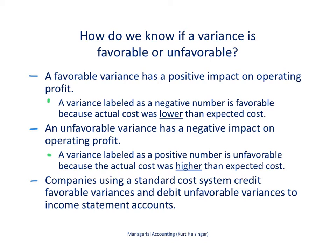Once we calculate the variance, how do we know if it's favorable or unfavorable? This applies to all variances — direct materials, direct labor, and variable manufacturing overhead. A favorable variance has a positive impact on operating profit. If a variance is a negative number, it's actually favorable because the actual cost was lower than the expected cost, meaning profits are higher than expected. This sometimes causes confusion — students think it should be a positive number, but a negative number means actual costs are lower than expected, which is generally a good thing.